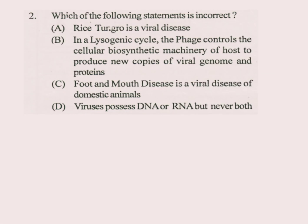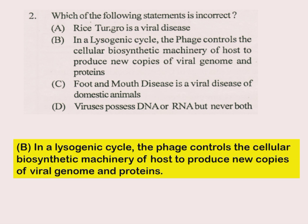Question number 2. Which of the following statements is incorrect? This question is B part. In a lysogenic cycle, the phage controls the cellular biosynthetic machinery of host to produce new copies of viral genome and proteins.